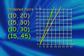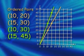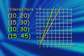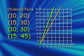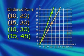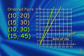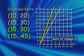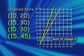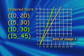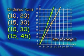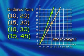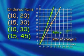Notice that the difference between the two lines is how steep they appear. The rate of change of the first line is 2, because the cost was $2 per ride. The rate of change of the second line was greater.